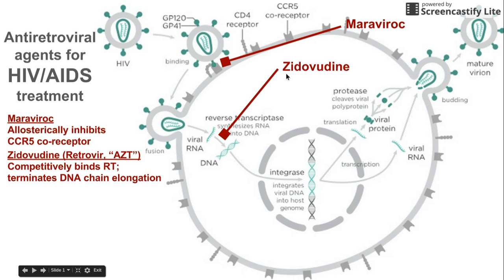Another drug that we use is called Zidovudine. This is the first one that was discovered for HIV treatment. It blocks the actions of reverse transcriptase — it competitively binds with this enzyme and prevents it from synthesizing DNA from RNA. It terminates the DNA chain elongation while it's happening. So Zidovudine is a reverse transcriptase inhibitor.